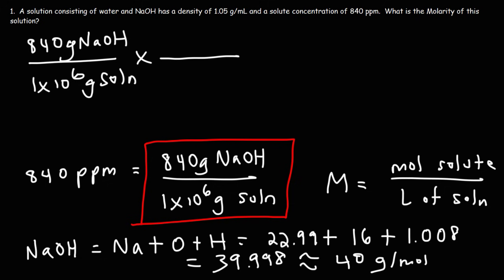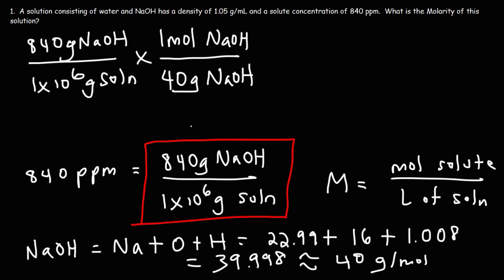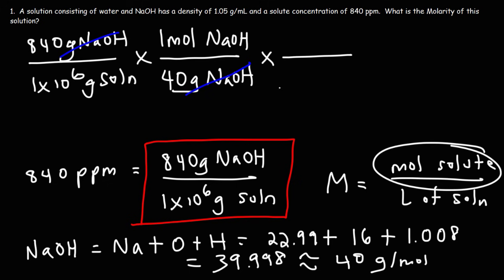One mole of sodium hydroxide has a mass of approximately 40 grams. Using this, we can cancel the unit grams of NaOH. We now have the moles of solute.